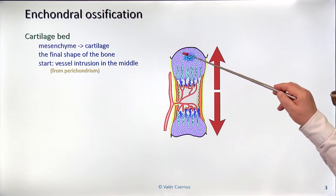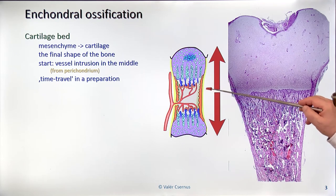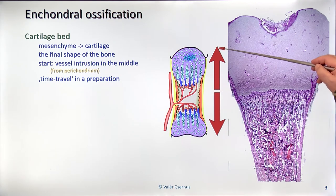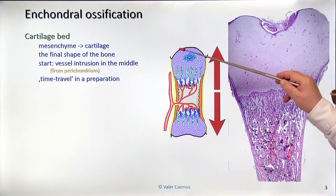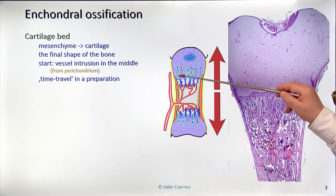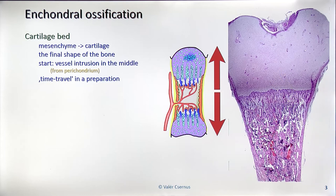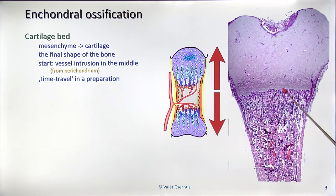In a preparation which is halfway through, we can see every single step of the development from the original cartilage to the ready-made bone. If we study in the opposite direction, we make a time travel and in a single preparation we can study every single step of the bone development. This is our model — a rat tibia. We use rat not human because it fits the microscopic view, and the things happen in exactly the same way as in humans.